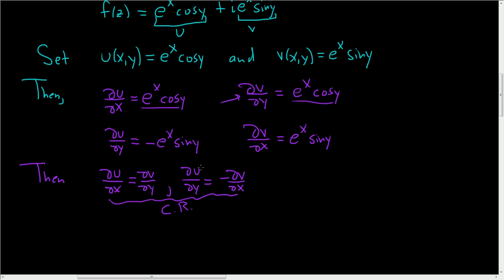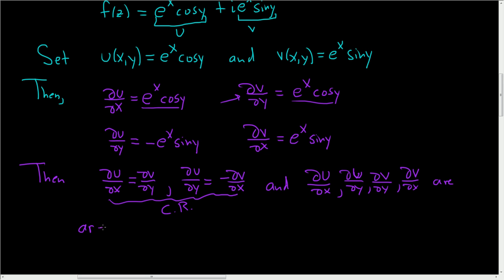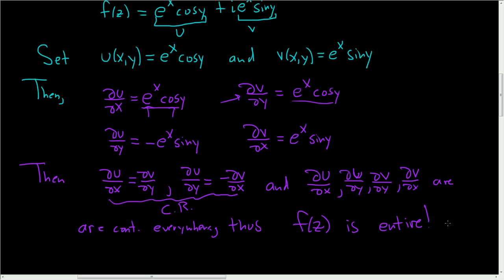It needs to be mentioned that ∂u/∂x, ∂u/∂y, ∂v/∂y, and ∂v/∂x are continuous everywhere in the complex plane — these are just continuous functions. e^x is continuous, cos y is continuous, so when you multiply them, they are continuous everywhere in the complex plane. Thus, f(z) is entire. So that's the proof that the complex exponential function is entire. You basically show that the Cauchy-Riemann equations hold and that all of these partial derivatives are continuous, which is obvious. I hope this video helps.